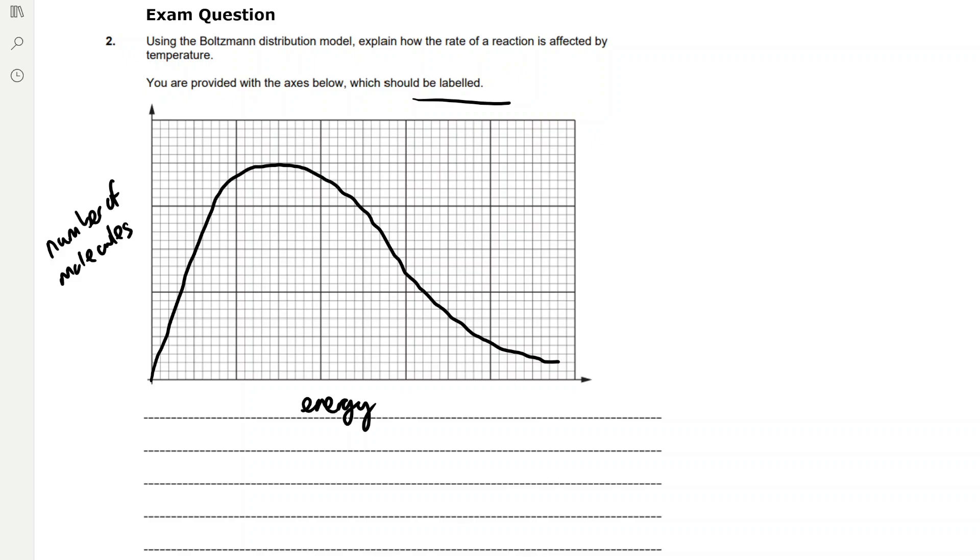And then we can draw a Boltzmann distribution for a higher temperature, so it's lower at the start and higher at the end. Then we want to label our activation energy, or Ea, so we can see that a large proportion of the reactive molecules will react upon collision in the correct orientation, because they have the required Ea, or activation energy.